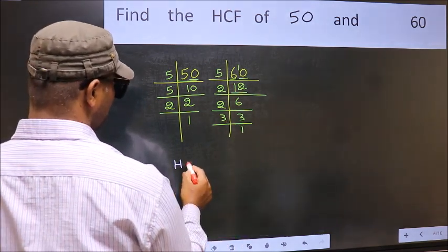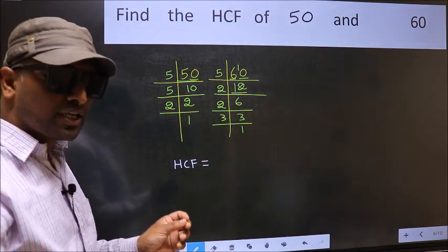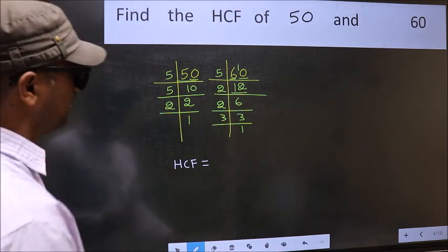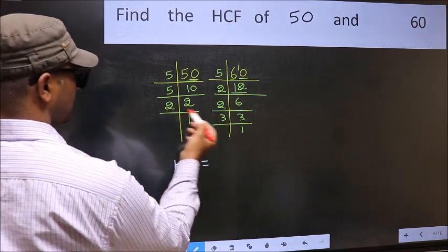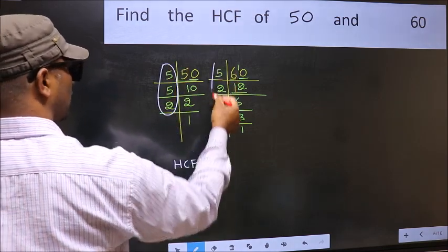Therefore our HCF is the product of the numbers which should be present in these two places, i.e. here and also here.